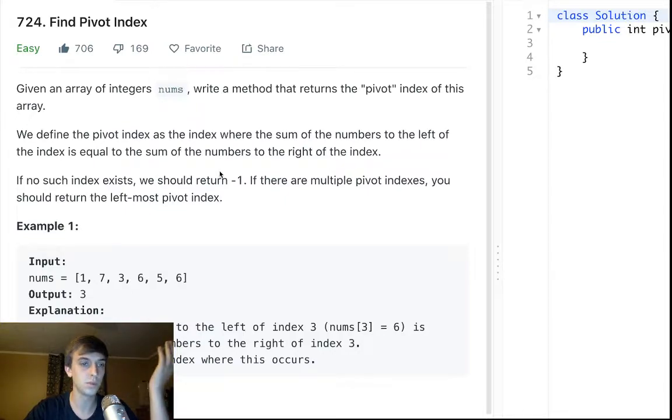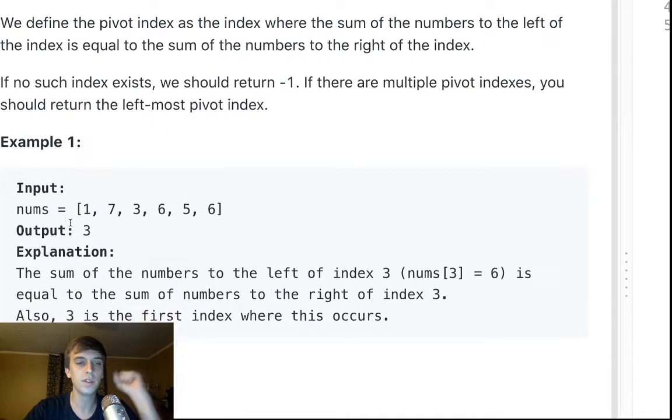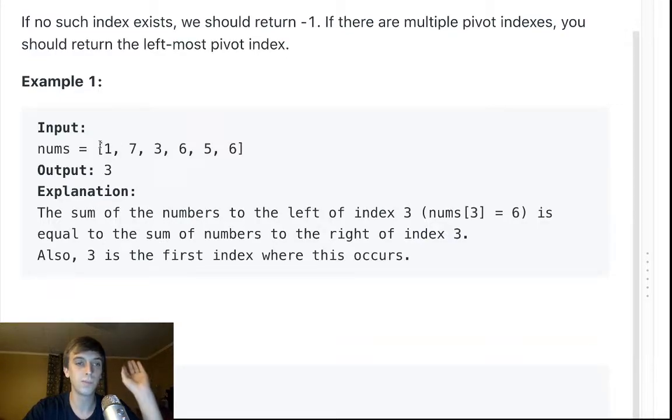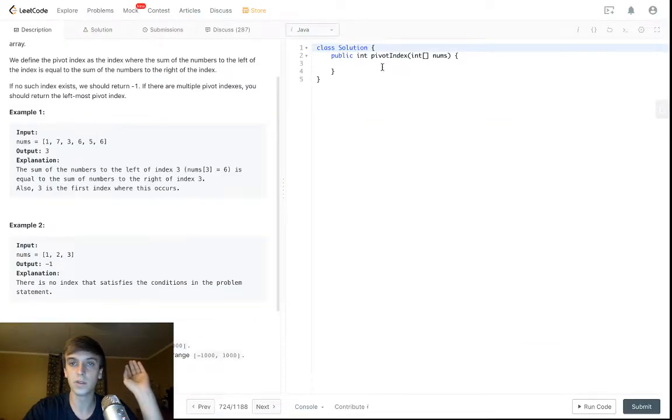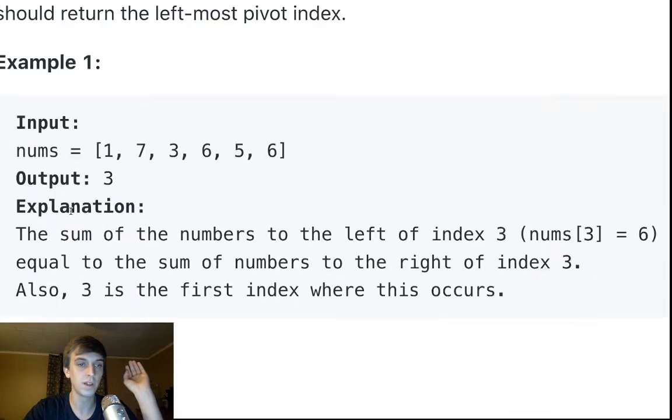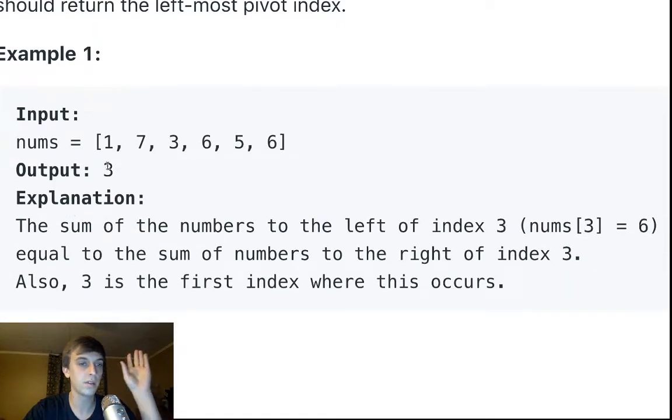If no index exists, we should return negative one. If there's multiple pivots, we should return the leftmost one. Let's look at an example. We're trying to find the pivot where, in this case, it says index three. The pivot is the index where the numbers to the left, all these numbers summed and added up, is equal to the numbers to the right summed and added up. So the numbers to the left, seven plus three plus one is eleven, and six plus five is eleven.